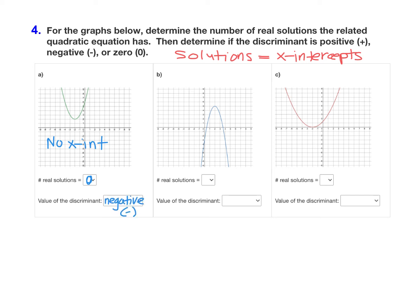Notice how graph B does cross the x-axis. It actually has two x-intercepts, which means that it has two real solutions. And if an equation has two real solutions, we know that the discriminant must be a positive number.